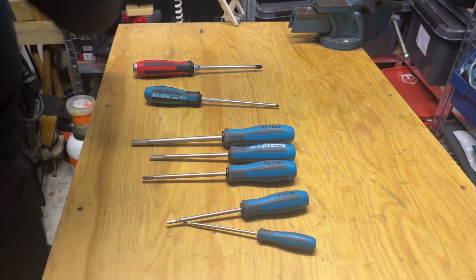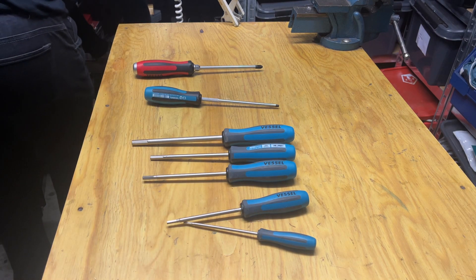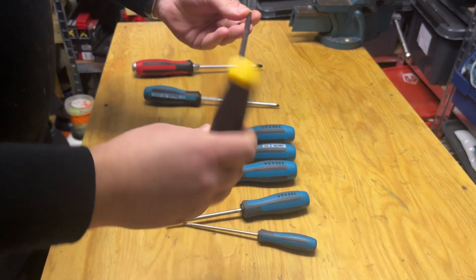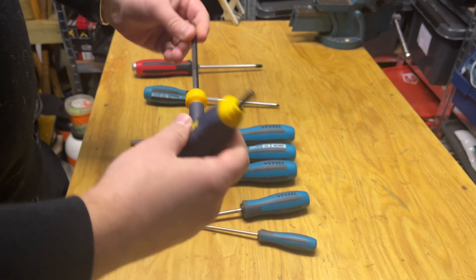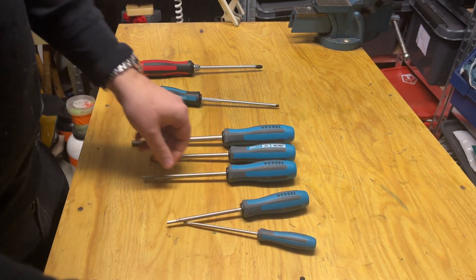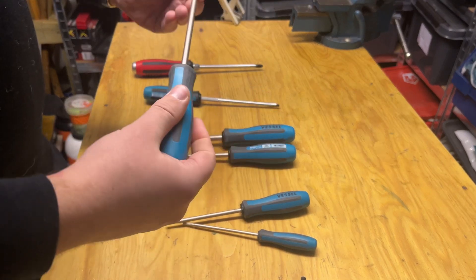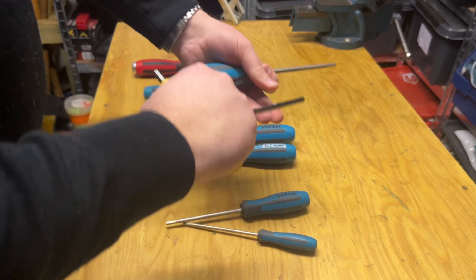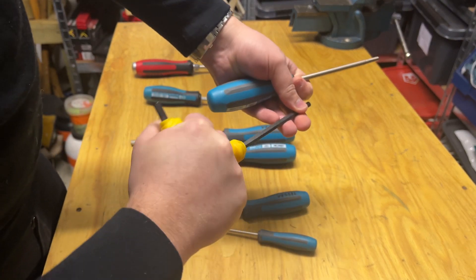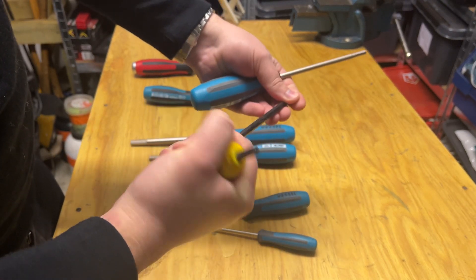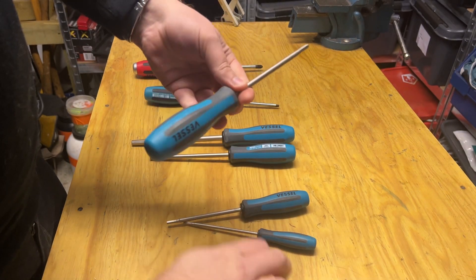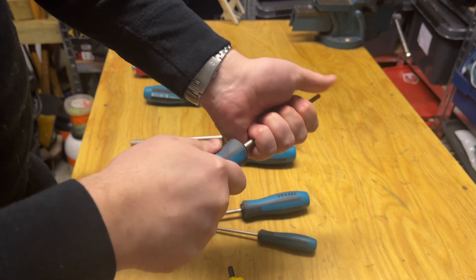If you were to work on a car or something, you'd typically be using a T-handle hex driver like this. But with these, they're more intended for work where you need to be a lot more delicate. It's easy with a T-handle to apply too much torque or twisting force. With these, you get a lot better feel for what you're doing.